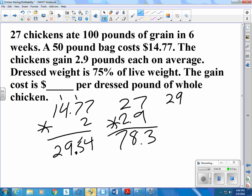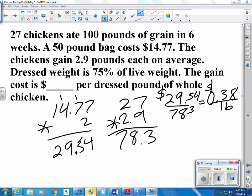So $29.54 divide by 78.3 pounds. So if we want to know price per pound, that would be live weight. We'll get it addressed in a minute. So that turns out to be 38 cents per pound live weight.